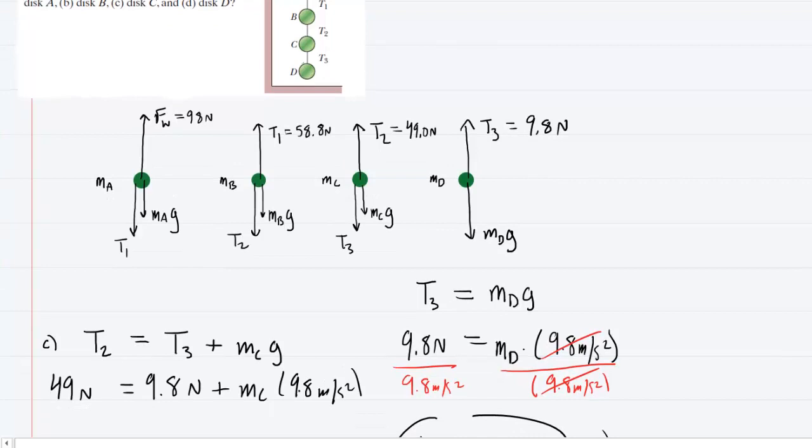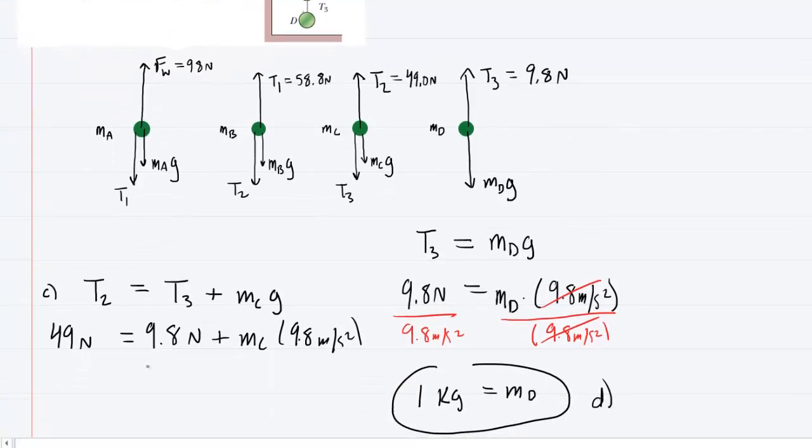So the rest for this disk is just a little bit of algebra. Let's subtract 9.8 newtons from both sides of the equation. And when we do that we're going to get 39.2 newtons here.